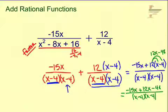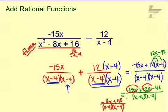Well, we have some like terms we can combine, two terms with an x. So if we say negative 15x plus 12x leaves us with a negative 3x plus 48 over x minus 4, x minus 4. And that will be our final answer.